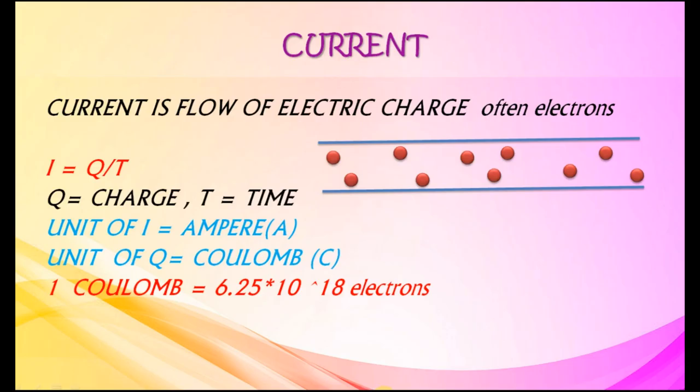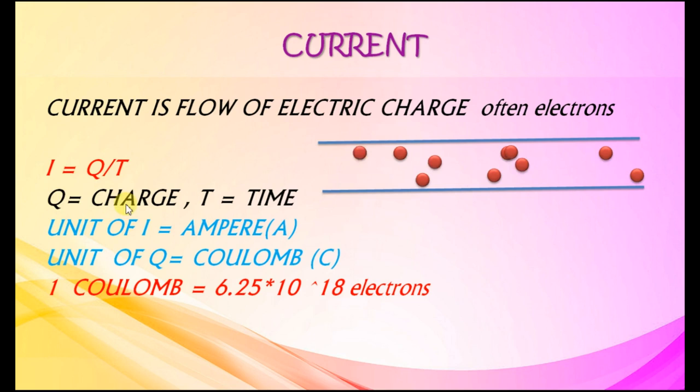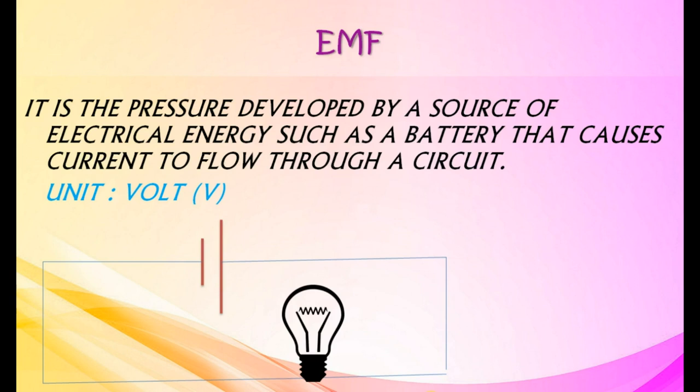Current is the flow of electric charge in an electrical circuit. Flow of charge is often due to movement of electrons. I equals Q by T, where Q equals charge and T equals time. Unit of current is ampere and unit of charge is coulomb. One coulomb equals 6.28 into 10 raised to 18 electrons.